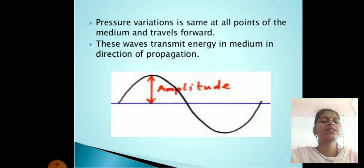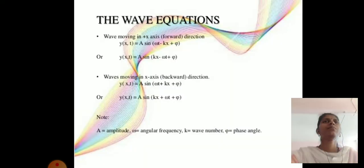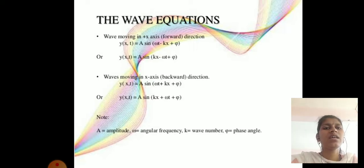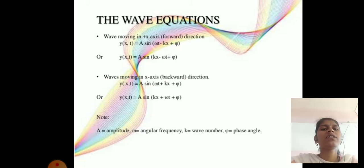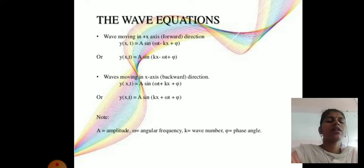The next property is the wave equation. For a wave moving in the positive x-direction, the wave equation is: y(x,t) = A sin(ωt − kx + φ).